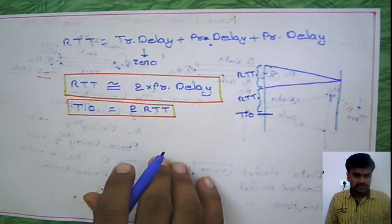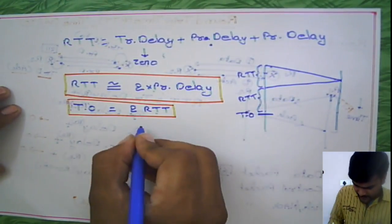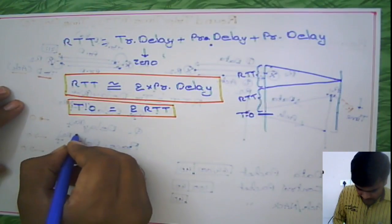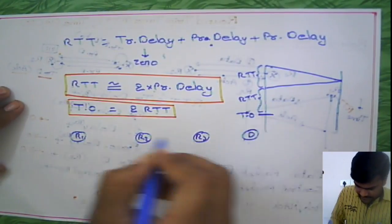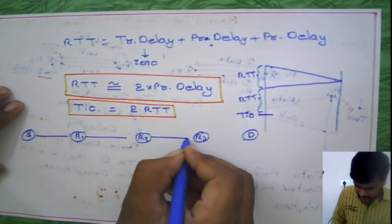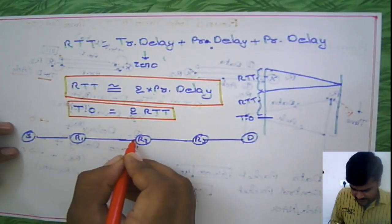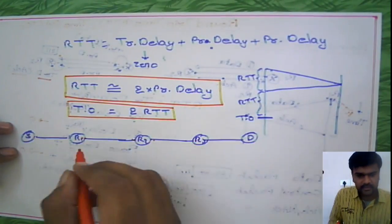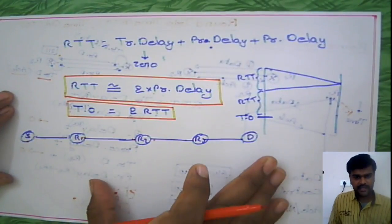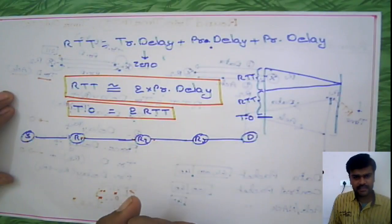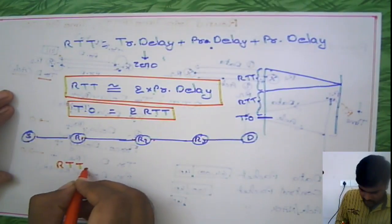Everything we have discussed so far is on a link-to-link basis. For example, suppose we have routers R1, R2, R3, with a source and destination. All the definitions we make are link-to-link — from here to here, or from here to here — but we are not considering source to destination. That end-to-end time delay is what actually needs to be considered, so we need to find the round trip time for the end-to-end connection.